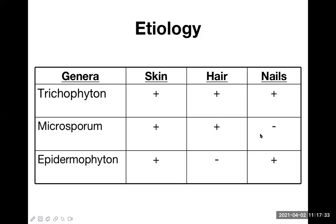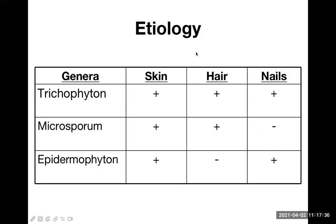Let's talk about dermatophyte infection today. These are the types of dermatophyte genera which cause human infection: trichophyton, microsporum, and epidermophyton. Trichophyton causes infection of the skin, hair, and nails — all three. Microsporum causes infection of the skin and hair only, and epidermophyton causes infection of the skin and the nail.